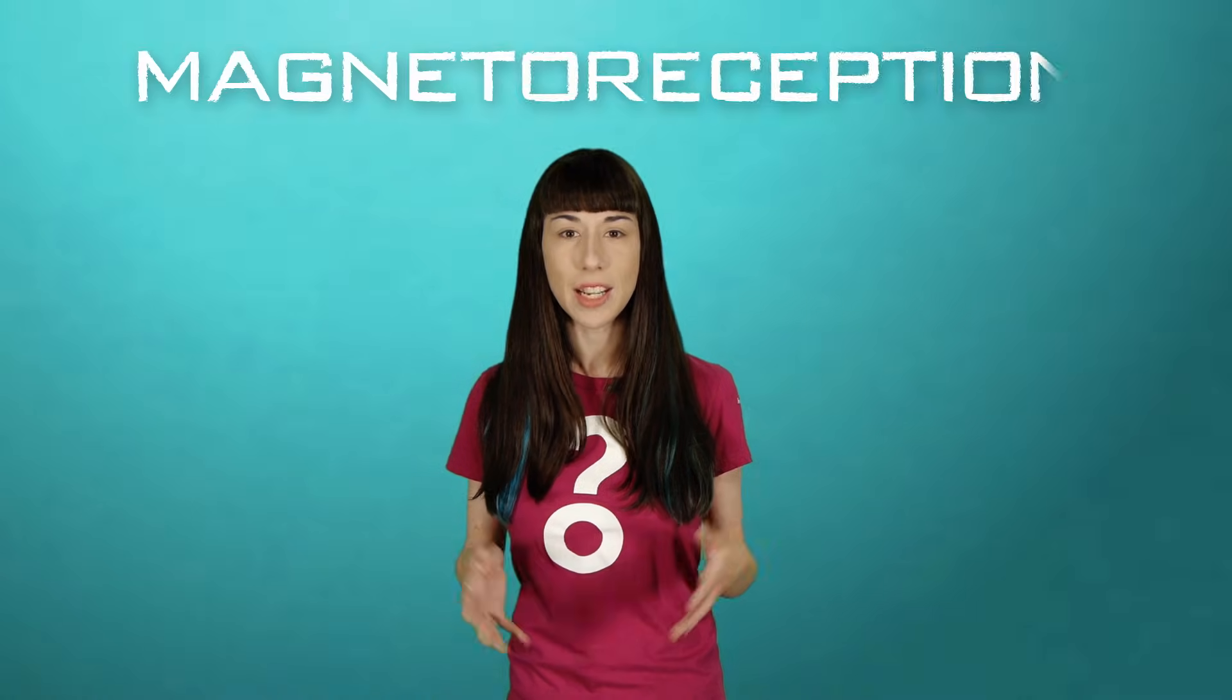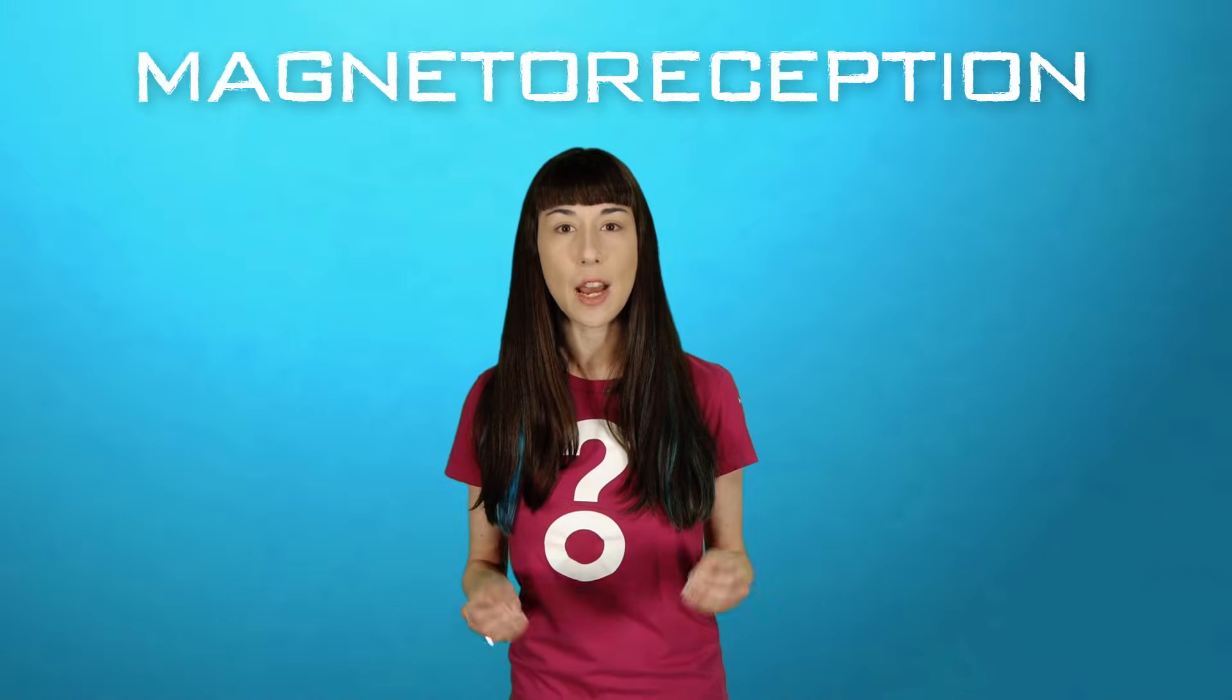Research has revealed that migratory birds have vision-based magnetoreception. They can see magnetic fields. And Earth is lousy with magnetic fields.